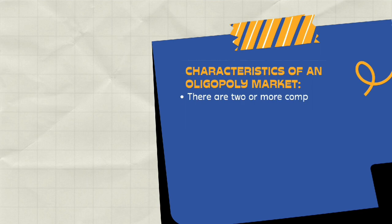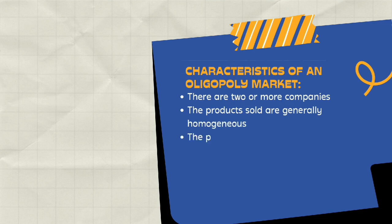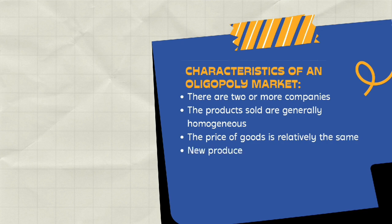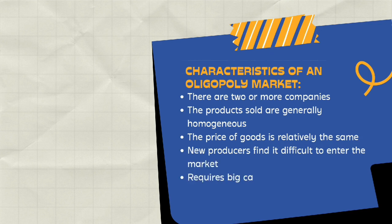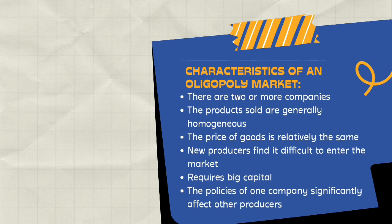The first characteristic of an oligopoly market is that it is run by two or more producers. Because of this characteristic, this type of market is called imperfect competition, since the number of producers selling the product is very small. This is of course different from other market types where producers are many in number, making competition maximal.